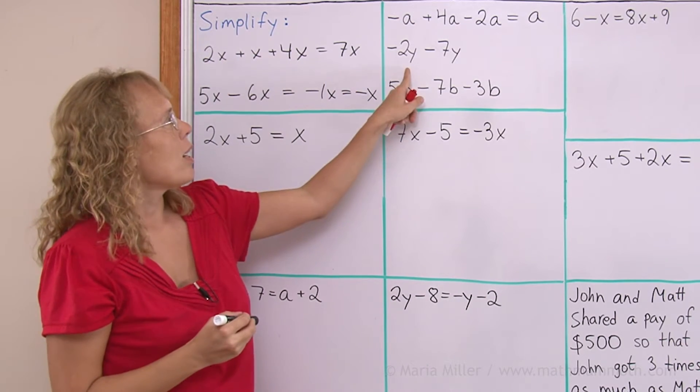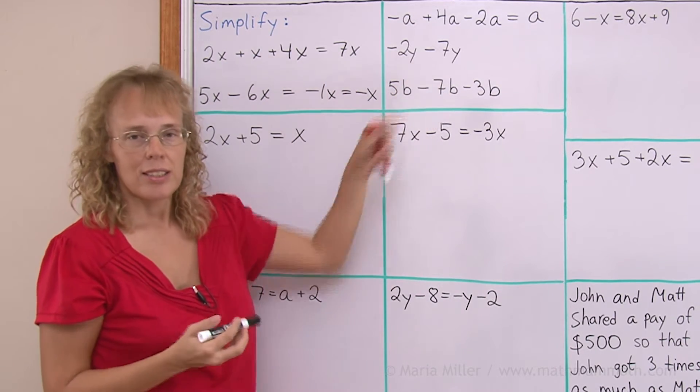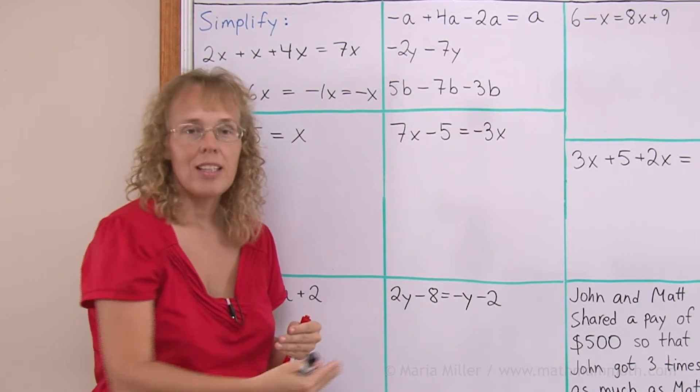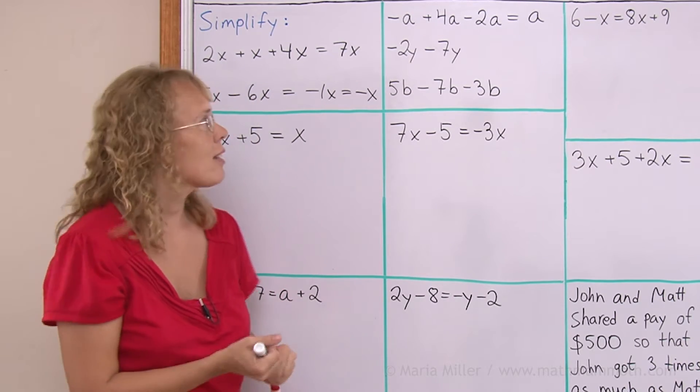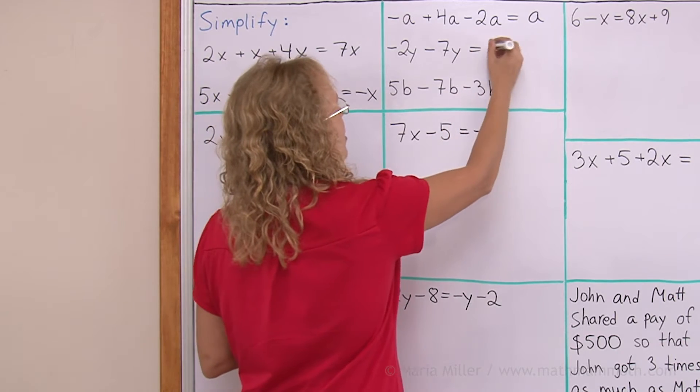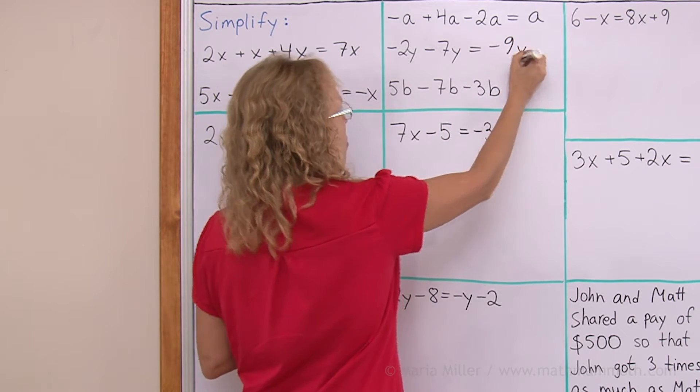Negative 2y minus 7y. This is like the problem negative 2 minus 7. That would be negative 9. But we have the y there. So, it is negative 9y.